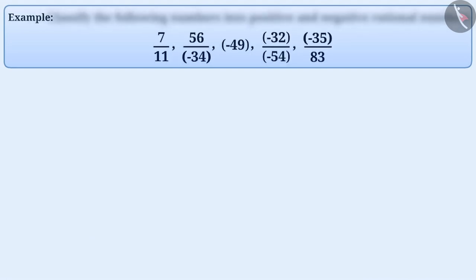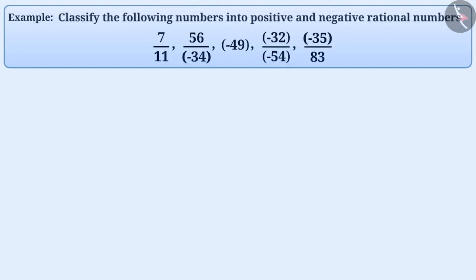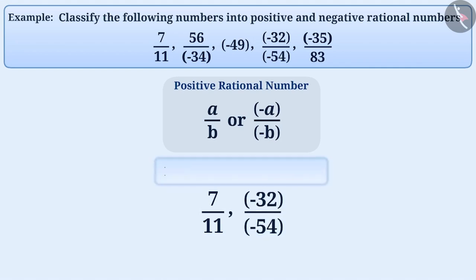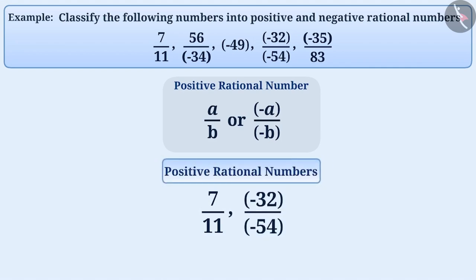Example 3: Classify the following numbers into positive and negative rational numbers. As we have learnt, if both the numerator and denominator of a rational number are positive integers or both are negative integers, then it is called a positive rational number. Here, 7 by 11 and minus 32 by minus 54 are positive rational numbers.